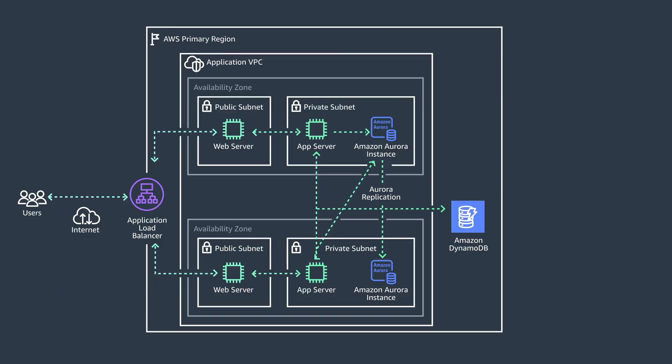This doesn't mean that you will be dropping the relational database. You can easily migrate it to Amazon Aurora if the source is MySQL or PostgreSQL. If keeping the data in the relational database is a must for auditing or reporting purposes, you can leverage DynamoDB Streams and AWS Lambda functions to reproduce the behavior of a write-through cache and store data in an Aurora instance without affecting the end-user experience. This pattern is what we call a hybrid database system.